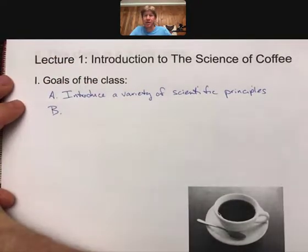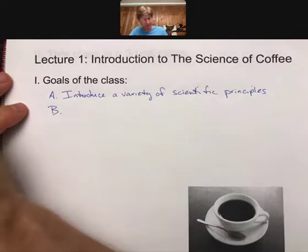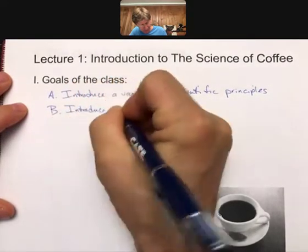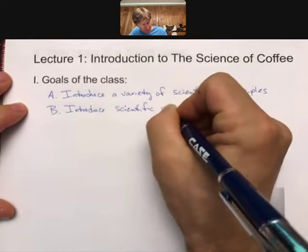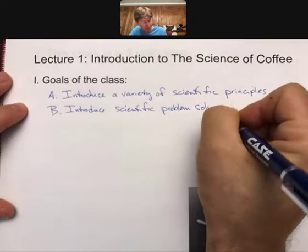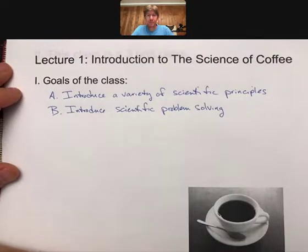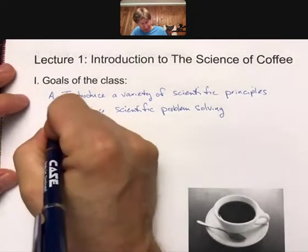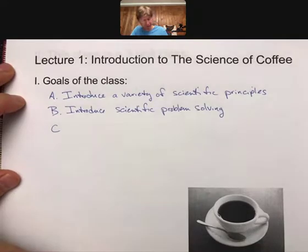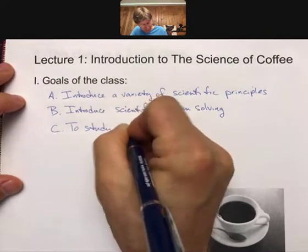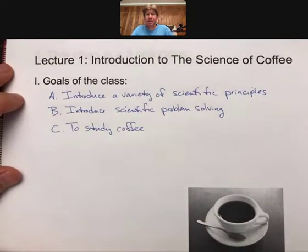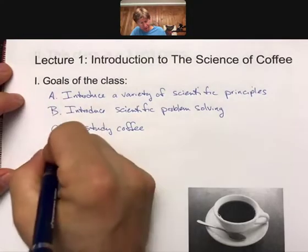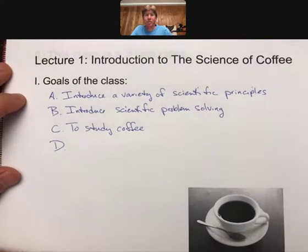Another goal of the class is to introduce scientific problem solving and have you actually do it. You'll be presented with a problem to solve — the problem is about coffee and making the best cup of coffee. A third goal is to study coffee: how to brew it, how to roast it, and the many variables that help us achieve our ultimate goal, which is to brew the best cup of coffee.